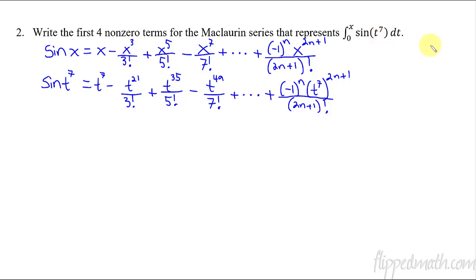Like, what are you going to do? U substitution? U equals t to the 7th? But then that won't work because things don't cancel. That's a pretty tough thing to do. But what we can do is write it down as a Maclaurin series. And then you can integrate this term by term.